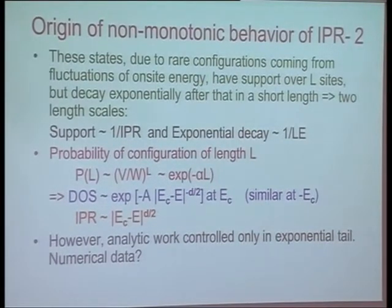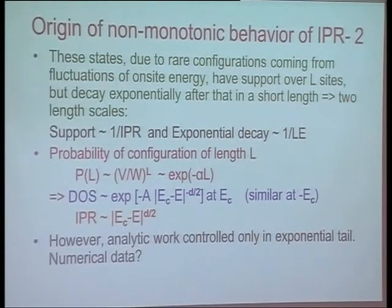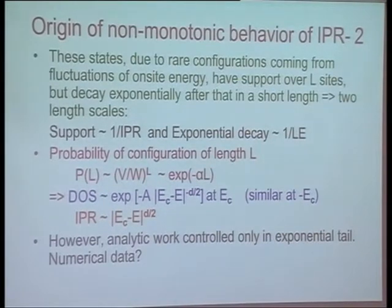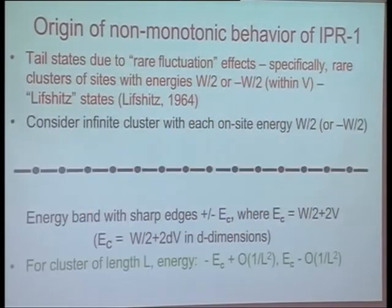The probability of having a configuration of length L in a one-dimensional system is exponential in the size of the system — you need all L sites to be within V of W/2. The density of states can be shown to be of the form exp(Ec − E)^(−D/2), which has an essential singularity. So the density of states is very, very small at the band edge. The inverse participation ratio, which goes as 1/L², has power-law behavior going to zero, consistent with our data, where a square-root behavior is confirmed numerically.